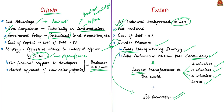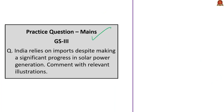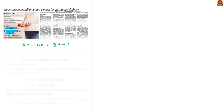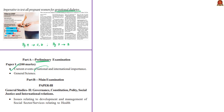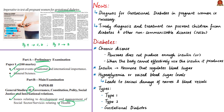With this we have come to the end of the solar energy analysis. Moving on to the next news article about gestational diabetes. The analysis will be helpful in prelims preparation under current events of national importance and general science, and in mains preparation in GS paper 2 under issues relating to development and management of the social sector relating to health. The news states that it is very necessary to test all pregnant women for gestational diabetes, as timely diagnosis and treatment can prevent children from becoming predisposed to diabetes or other non-communicable diseases.